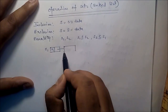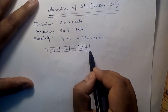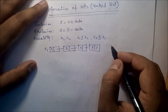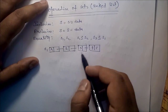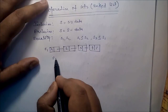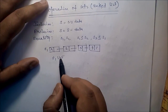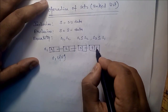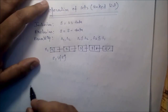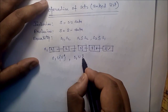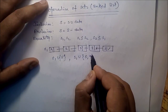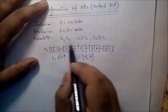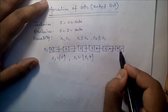Suppose s1 contains data two, three, and four. Now suppose we want to add five, so we want s1 union five. We have to check whether five is already there or not. If five is not there, then we can insert five. Similarly, suppose we want to insert five and nine — five is already there, then check nine; nine is not there, so we can insert nine. That is inclusion.